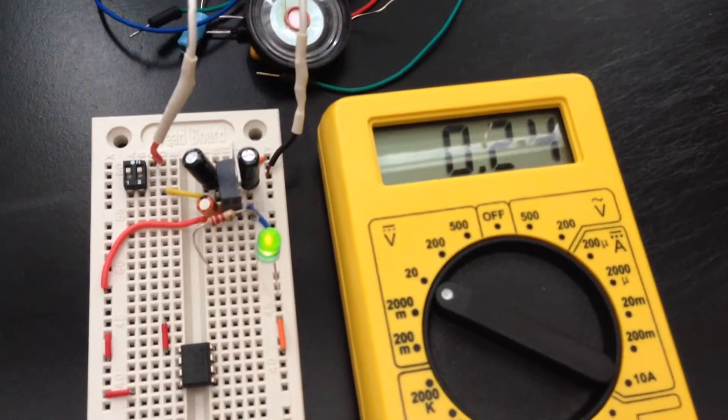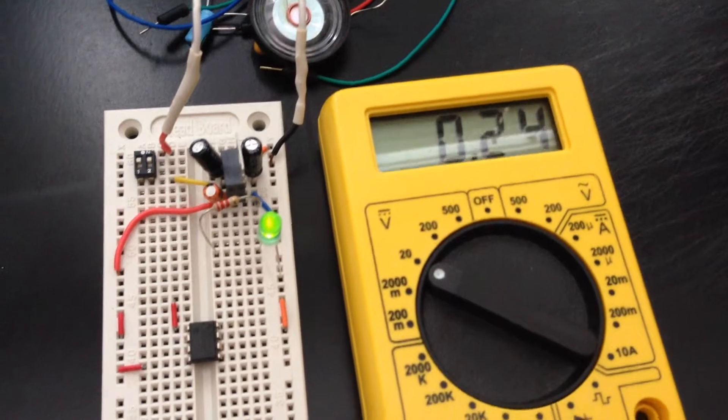So I am in a dark room. I've got the blinds closed and you can see that it's reading about 0.24 volts.